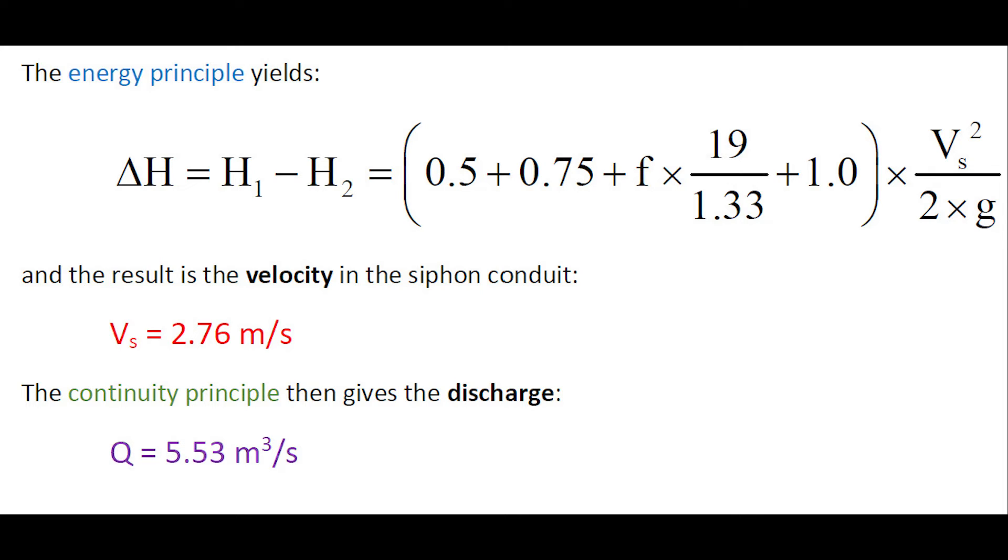The continuity principle gives us the discharge Q of 5.53 cubic meters per second.